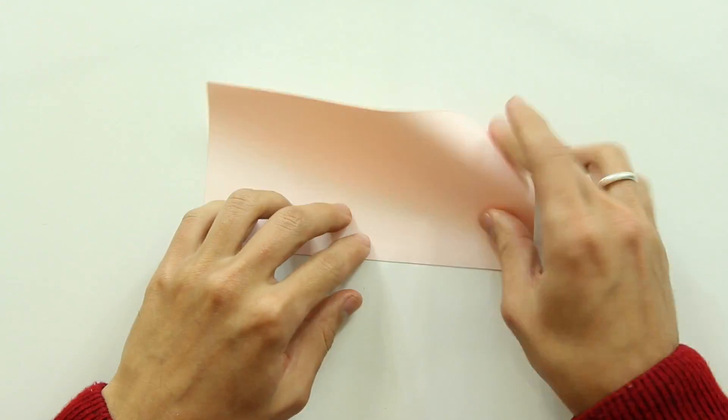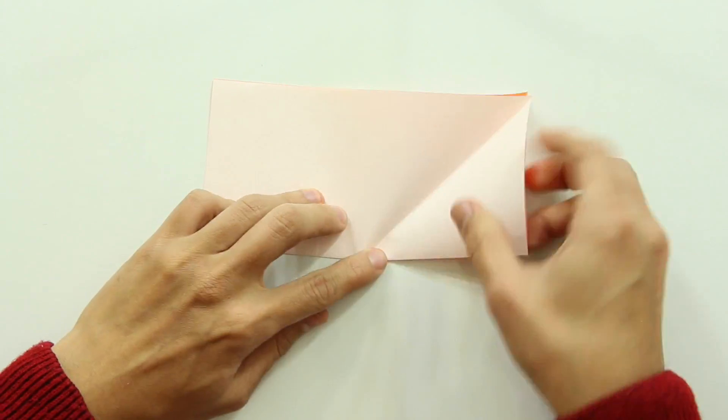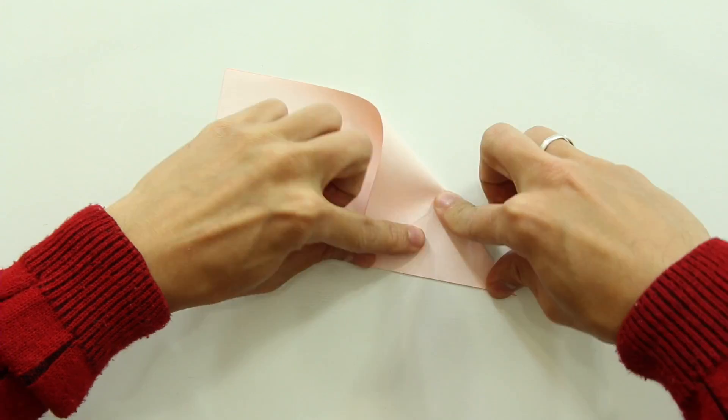One famous method is like this: fold the paper in half, now fold here, one side of the paper, like this.